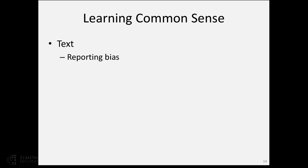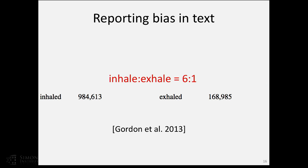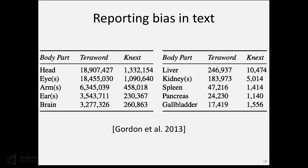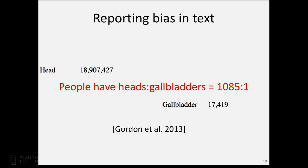In text, it is more likely that 'man bites a dog' than 'dog bites a man' — but that's not what you want to learn. If you look at how often different phenomena are mentioned with respect to people in text, and use that frequency as a proxy for how often it happens in the world, you would conclude that people inhale six times as often as they exhale, and get murdered 17 times as often as they exhale. People appear to have heads 1,100 times as often as they have gallbladders — not because it's true, but because we don't talk about gallbladders.